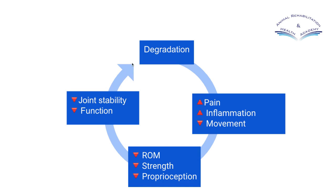And that leads back to further degradation. So just to summarise: we get degradation in the joint, which means more pain, more inflammation, less movement, reduced range of movement, reduced strength, and reduced proprioception — which then leads to reduced joint stability and reduced function, which leads back to degradation. We go round and round this cycle as the patient worsens.